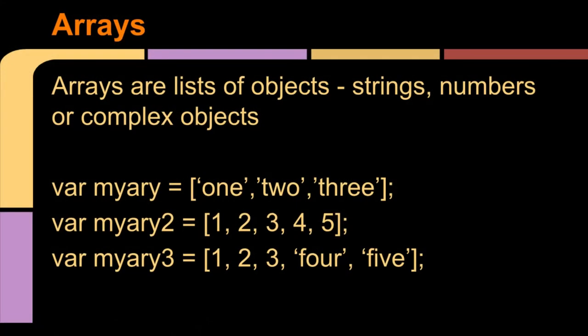The last thing we're going to look at today are arrays. Arrays are lists of objects, could be collections of strings, numbers or complex objects. And here are some examples. An array is simply a variable. So we're using the var keyword, and then giving it a name, in this case, my array equals, and the array is defined inside the square brackets. It's any number of items separated by a comma in between. In the first example, it's three strings, one, two, and three. In the second example, it's five numbers, one, two, three, four, and five. And in the last example, it's a mixture of numbers and strings.